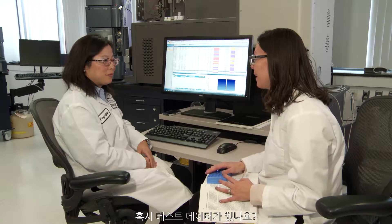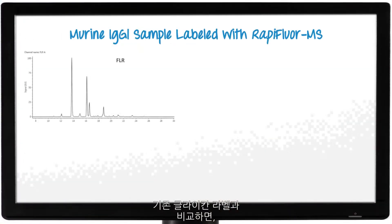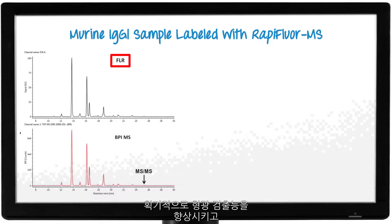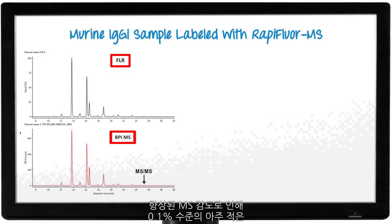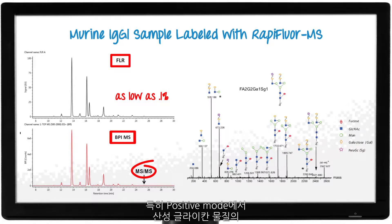Do you have any examples of data? Let's take a look. Compared to the conventional glycan labels such as 2AA and 2AB, the rapid-floor MS label significantly enhances fluorescent and mass spectrometry signals. The increased MS signal enables the detection and identification of very low-level glycans, as low as 0.1% level. In addition, rapid-floor MS improves the collision-induced fragmentation, particularly for acidic glycans in positive ion mode.